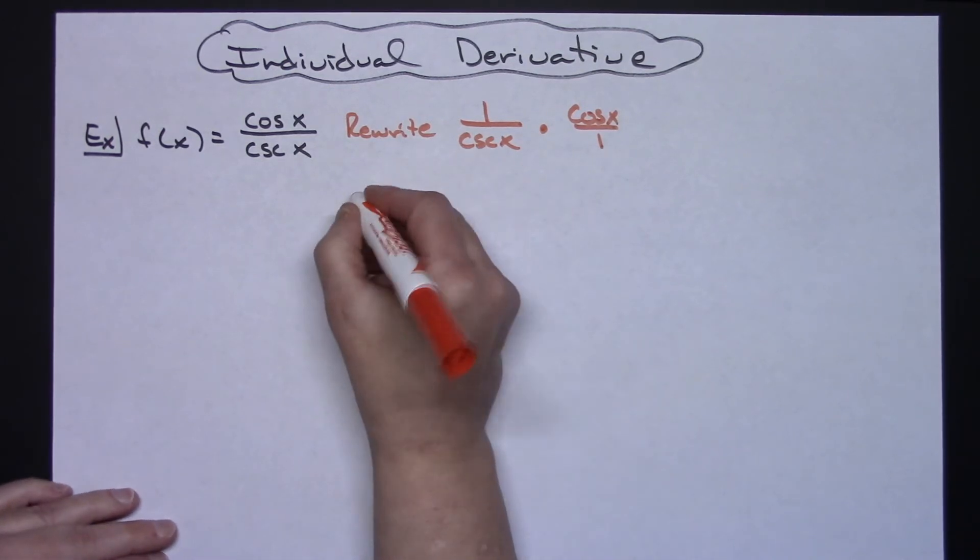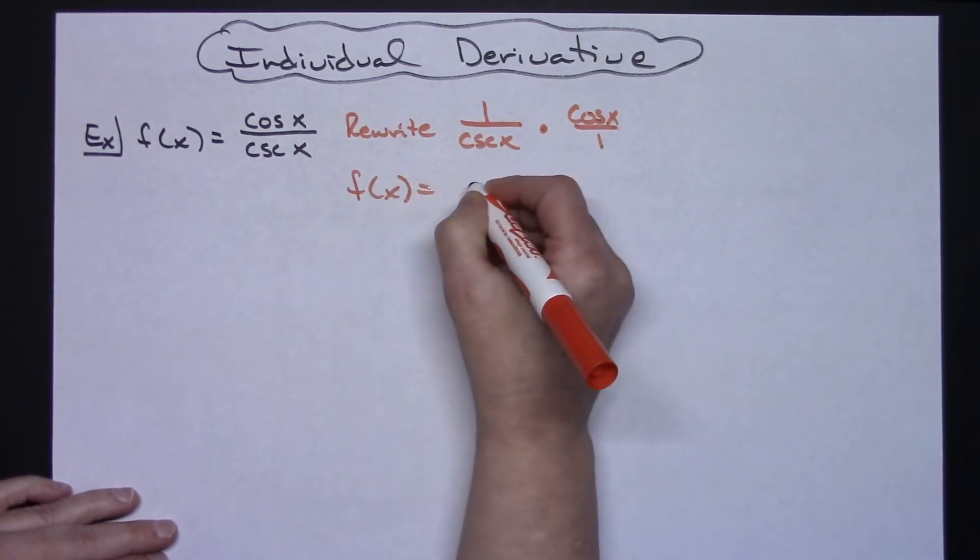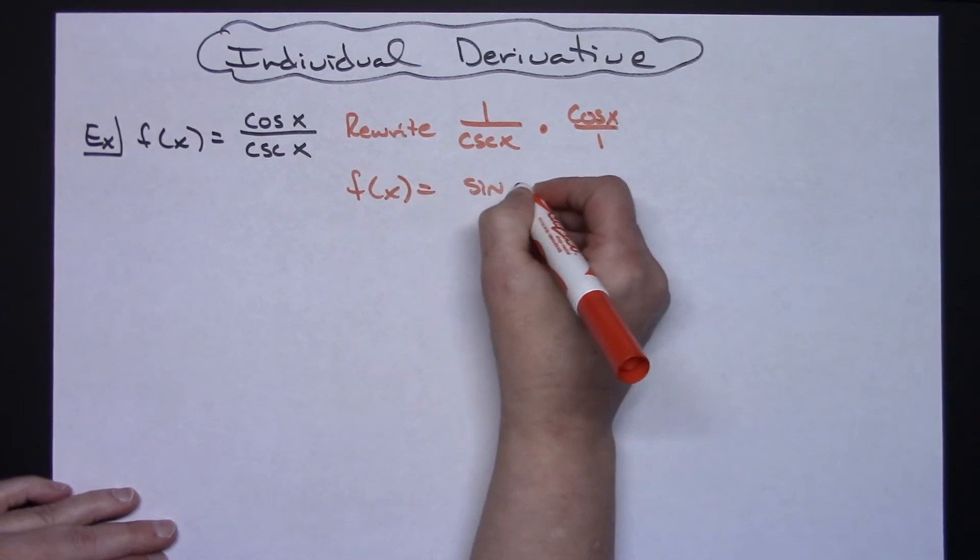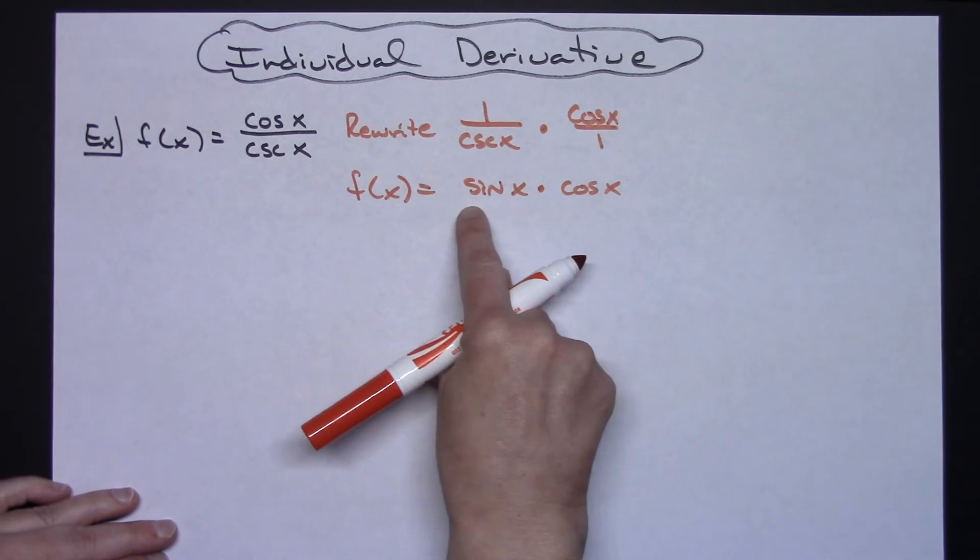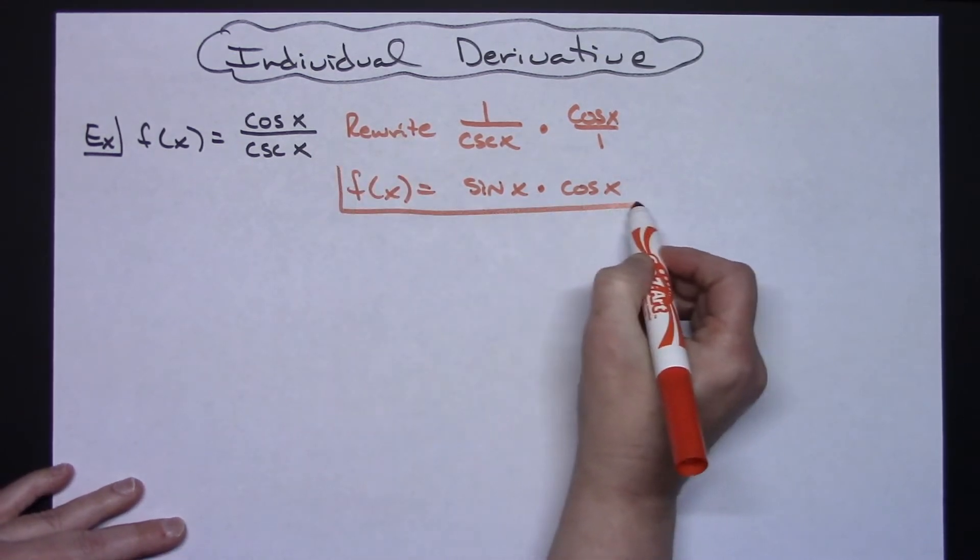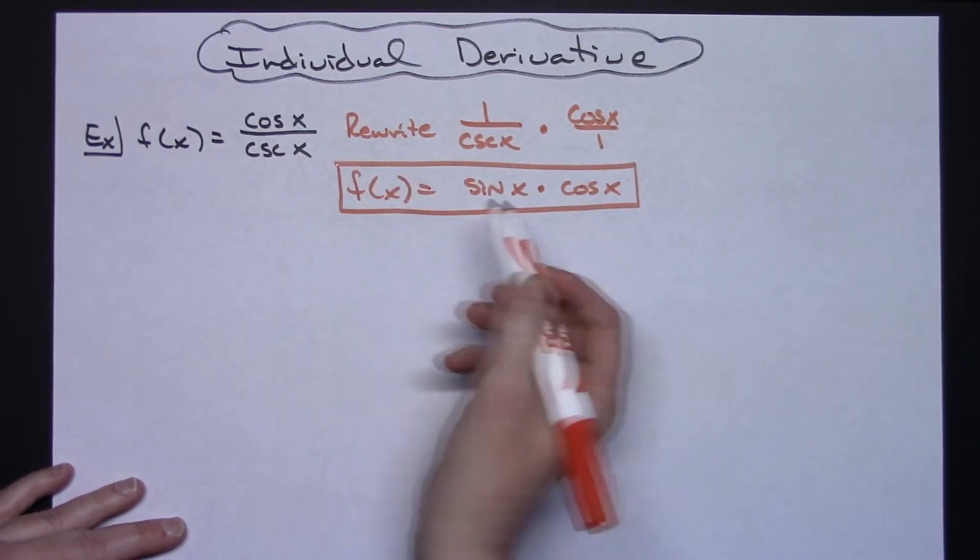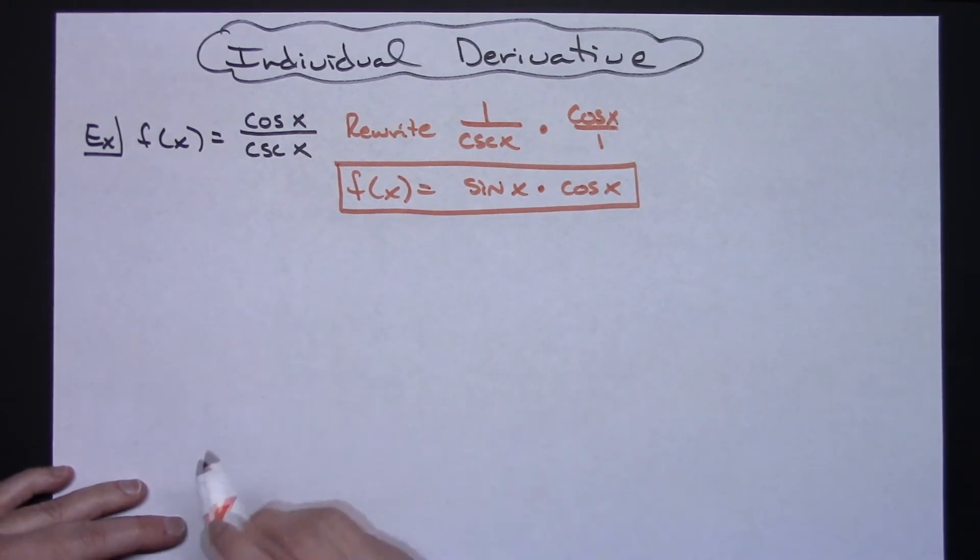So that's going to make my function f(x) equal to sine x times cosine x. Now the entire function becomes a product rule as opposed to that quotient rule, and it's going to be a lot easier derivative to figure out from there.